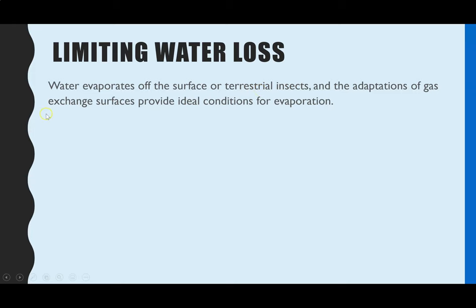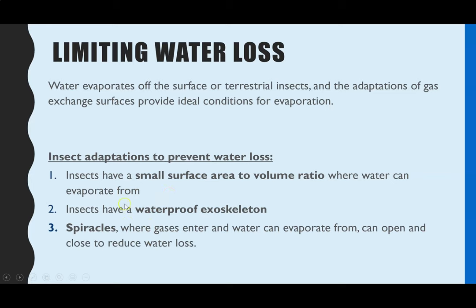What we'll be looking at is the adaptations insects have to reduce water loss. There are three key things. First, their gas exchange system has quite a small surface area to volume ratio where water can evaporate from — linked to the idea of spiracles, there's only a very small hole where water can evaporate from. They also have a lipid layer on their exoskeleton making them waterproof, so water can't evaporate across all of their body. Water loss only occurs through the spiracles, which can open and close so they won't remain permanently open — this is to prevent water loss.